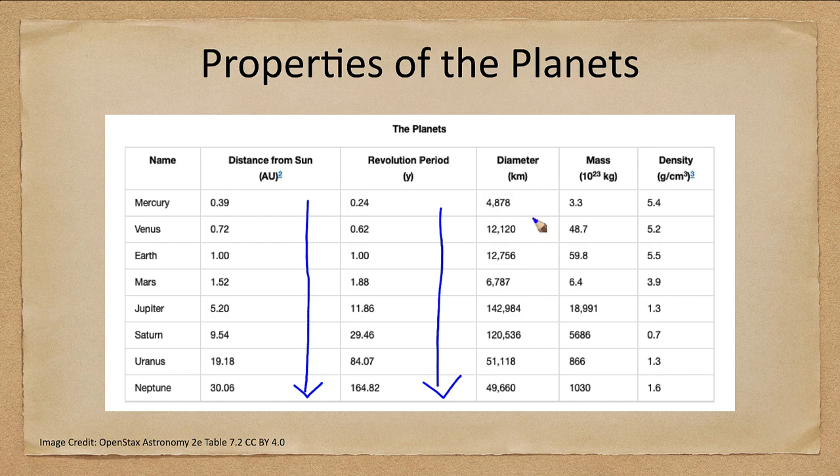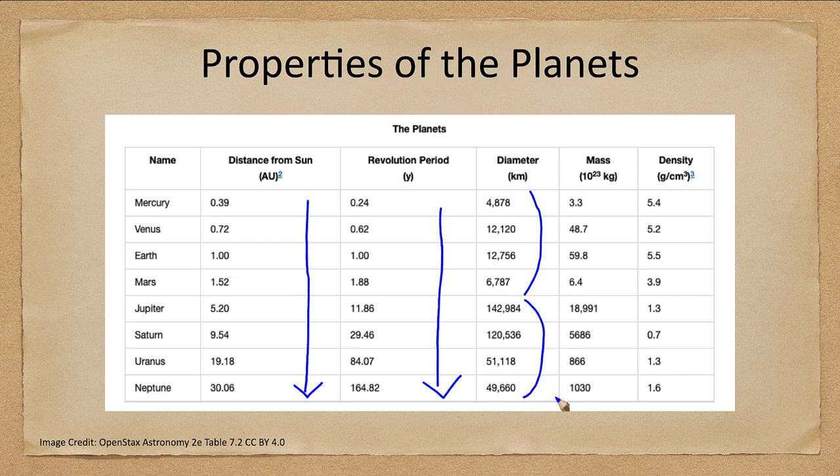Sizes, we note that there's a big difference in sizes. We have much smaller planets in the inner solar system, and much larger planets in the outer solar system.